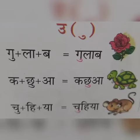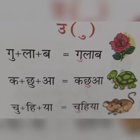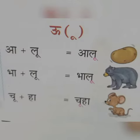Listen children, U — in the bracket it is given the symbol of U. Gulab: Gu plus la plus ba is equal to gulab. Ka plus chu plus a: kachu a. Chu plus he plus ya: chuheya.